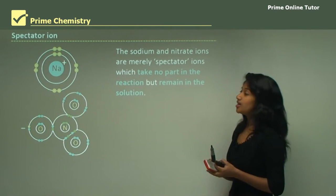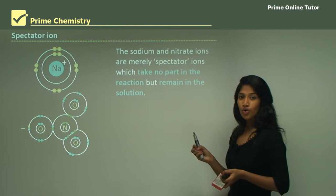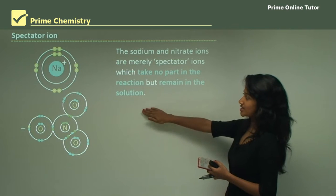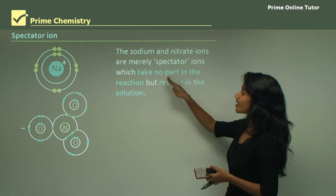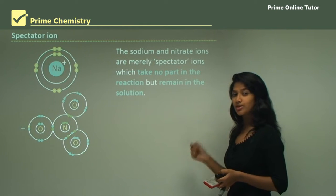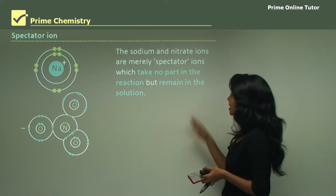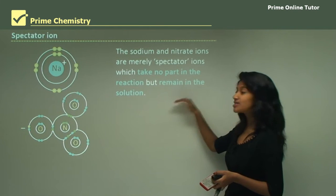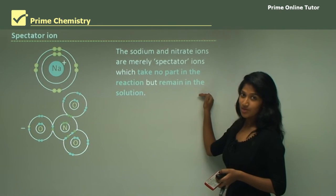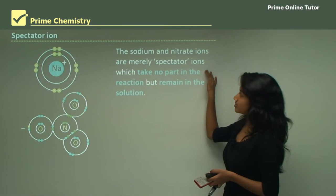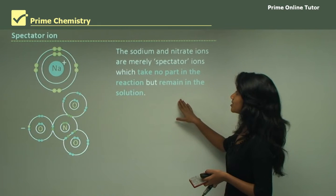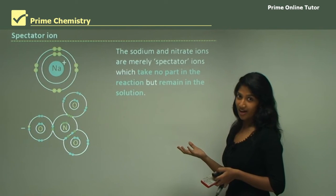Spectator ions: these are the ions — like the sulfates and chlorides we cancelled out earlier when writing ionic equations — that take no part in the reaction. They are not involved in the proton transfer and always remain in solution. Because they don't participate in the proton transfer reaction, they're known as spectator ions. In the reaction between sodium hydroxide and nitric acid, the sodium and nitrate ions are the spectator ions.